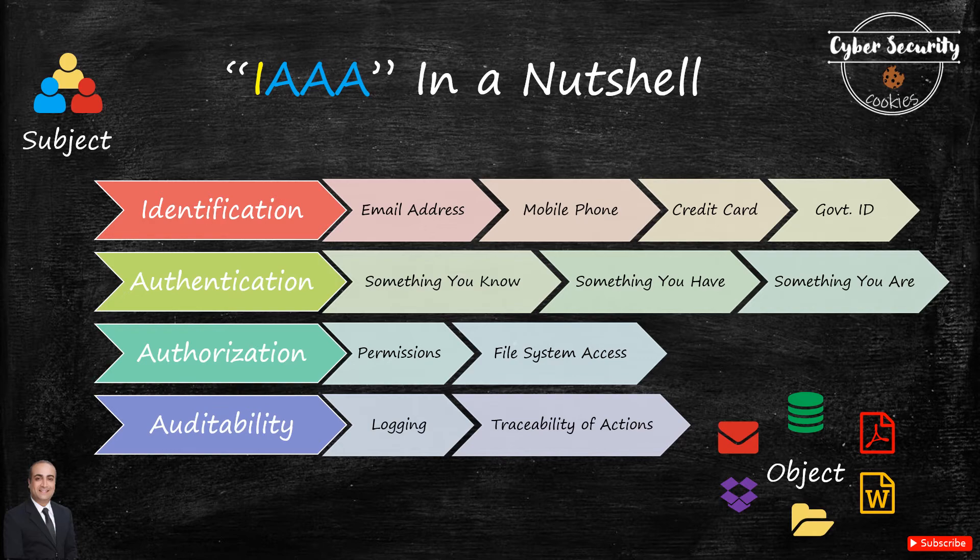Level one will be an email address. Level two can be a mobile phone. Level three can include a credit card. And level four can be a government-issued identity.